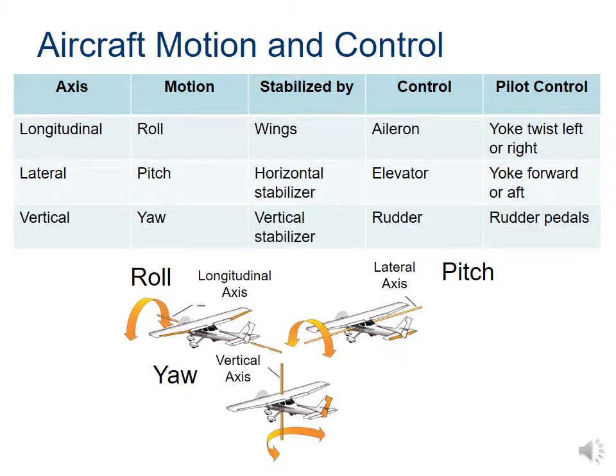To summarize: the longitudinal axis — roll — is controlled by the wings and the ailerons. The lateral axis — pitch — is controlled by the horizontal stabilizer and the elevator moving up and down. Yaw, about the vertical axis, is controlled by the vertical stabilizer and the rudder attached to it moving back and forth.